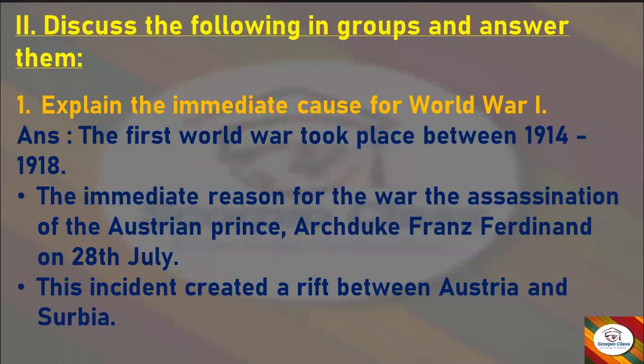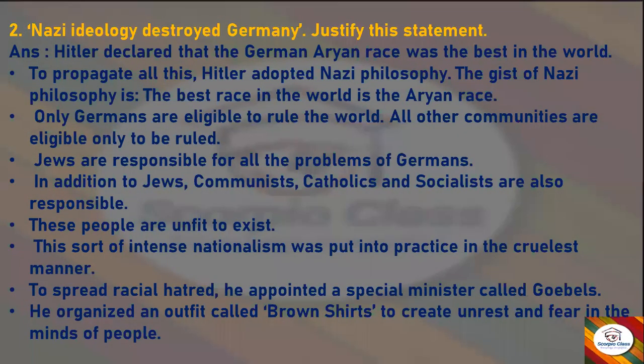First question: Explain the immediate cause for World War One. Answer: The First World War took place between 1914 to 1918. The immediate reason for the war was the assassination of the Austrian prince Archduke Franz Ferdinand on 28th July. This incident created a rift between Austria and Serbia.